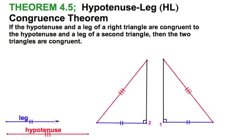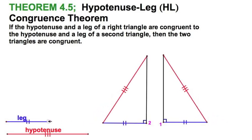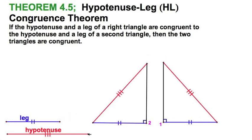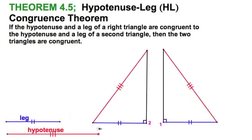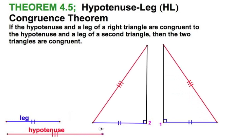In this particular case, I've got two triangles, and if they each have this blue leg and the red hypotenuse, well, they're congruent. It's all that easy.